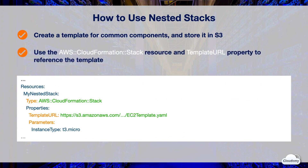You can also pass values to the nested stack using parameters. Each parameter has a name corresponding to a parameter defined in the embedded template. This allows you to add custom configurations to the nested stack. For example, you can use parameters to specify the EC2 instance type in the nested stack.